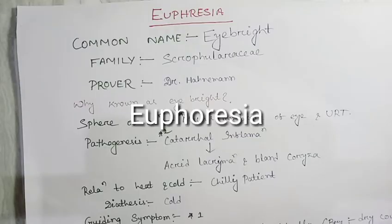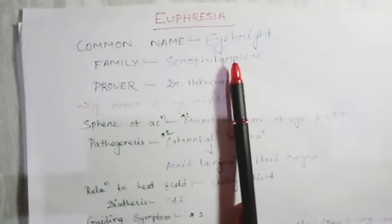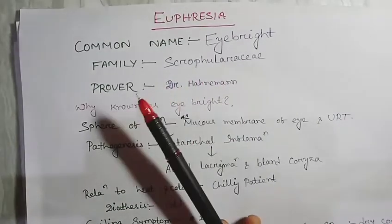Welcome friends, today we will discuss our first topic, Euphrasia, on the channel Homeopathy Lighters. Let us start. Every drug has a common name; this one is known as Eyebright. Its family name is Scrophulariaceae, and the prover is Dr. Hahnemann himself.